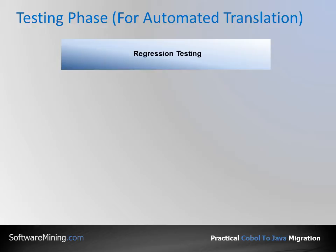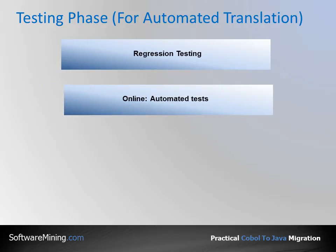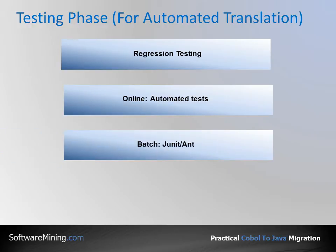The first task is to produce a set of test scripts for the existing system — i.e., documenting that a given set of data and actions would produce certain results. For online applications, the actions would be the keyboard entries; results would be the material displayed on the screen or data updated in a database. For batch, the action is running the batch process and results would be the generated reports and updated data. Performing the same tests on the new system should produce identical results, and this is all the testing which is needed.